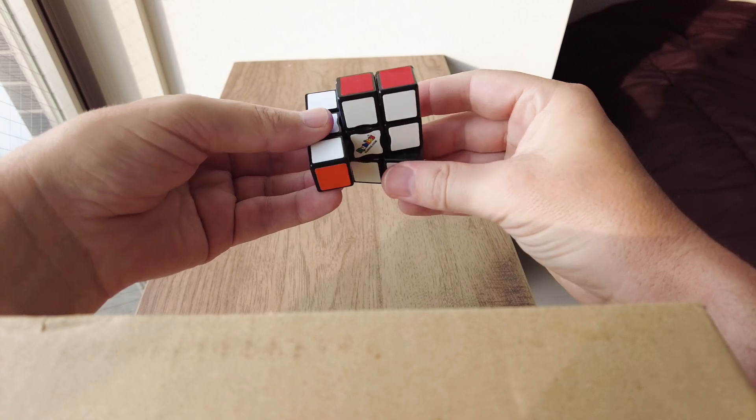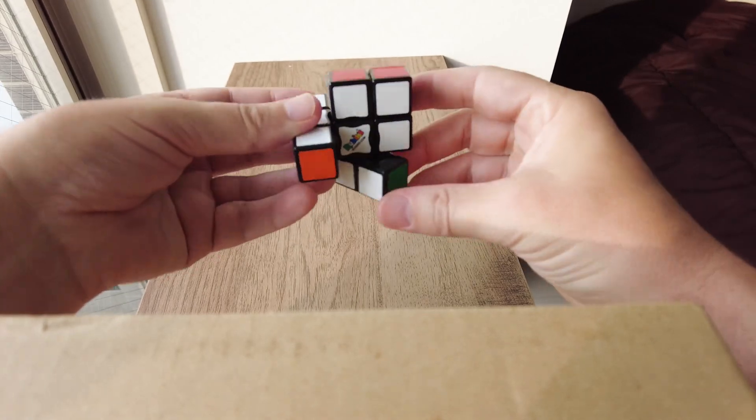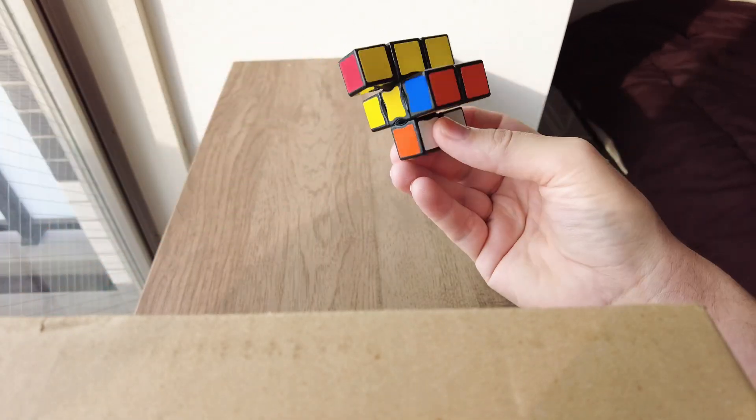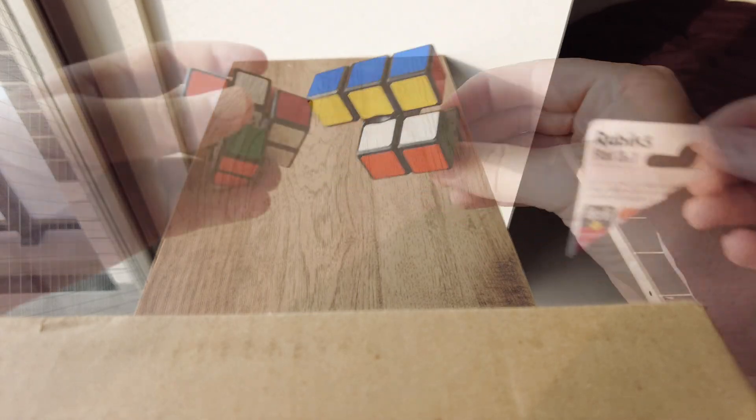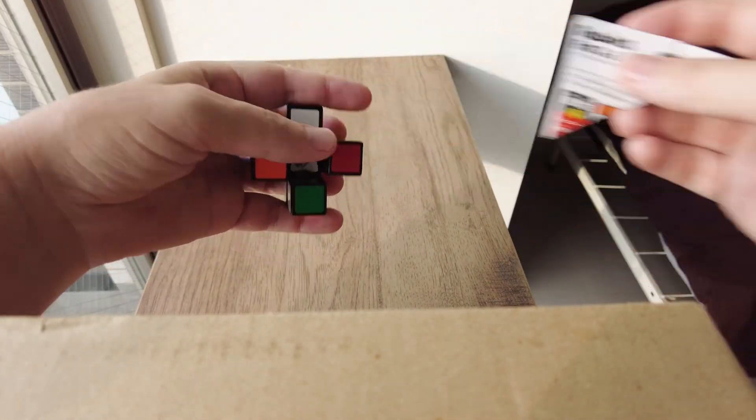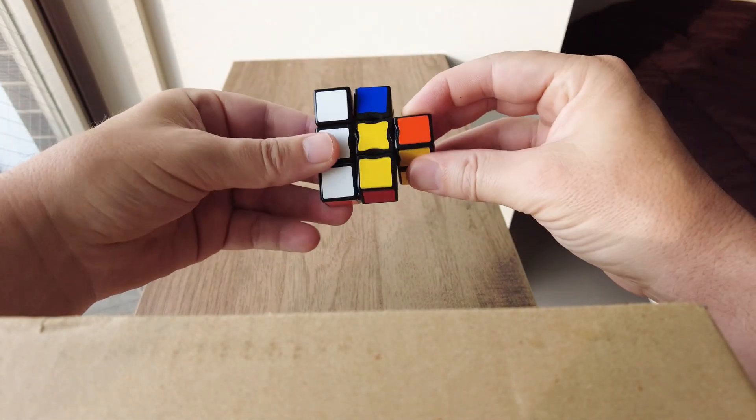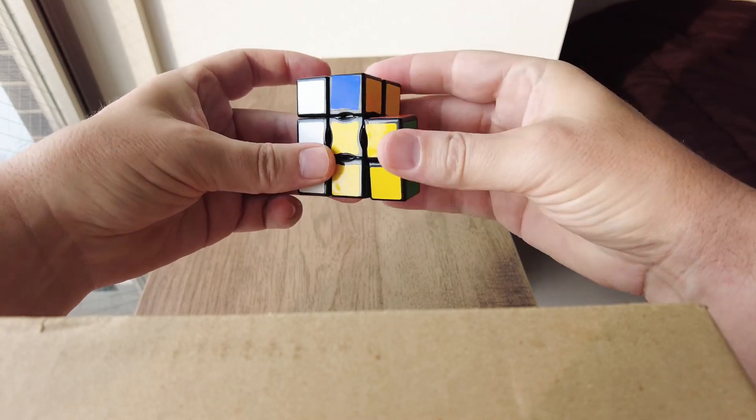And it turns like this. One thing to note is you can get various shapes that are not flat. It says it's called here Rubik's Flat, but you can make it not flat. To solve it, you need it to be flat.